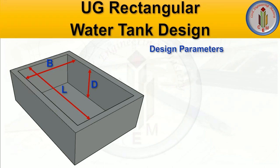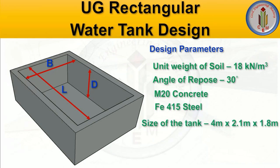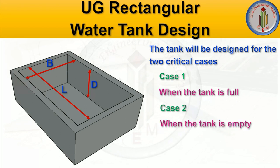Now let's look at the design parameters: unit weight of soil is 18 kN/m³, angle of repose is 30 degrees, M20 grade concrete, and Fe415 steel. Tank size is 4m × 2.1m × 1.8m. The tank will be designed for two critical cases: one is when the tank is full of water, and the second is when the tank is empty.